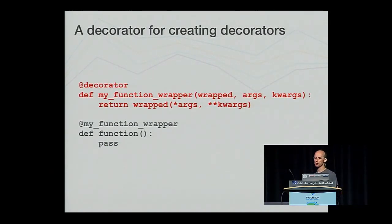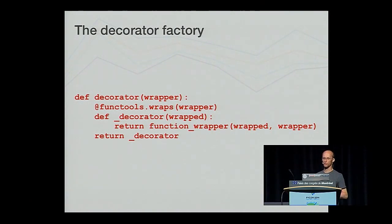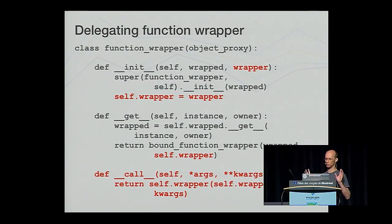Calls like inspect.getargspec and inspect.getsource will also work and return what we expect. So we have a pattern now for implementing a decorator that appears to work correctly, but needing to do all that each time is more work than we really want. What we can do therefore is create a decorator to help us create decorators. This would reduce the code we need to write for each decorator to a single function. As it turns out, our decorator factory is quite simple and isn't really much different to using a partial — combining our new wrapper function argument from when the decorator is defined with the wrapped function when the decorator is used, and passing them into our function wrapper object.